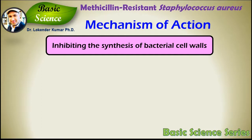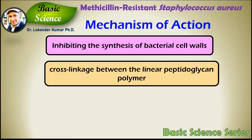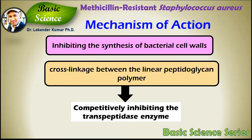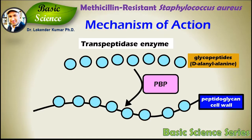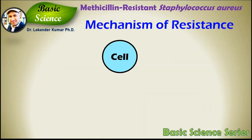Like other beta-lactam antibiotics, methicillin acts by inhibiting the synthesis of bacterial cell walls. Cell wall is very important for bacterial survival — it protects it from environmental stress. It inhibits cross-linkage between the linear peptidoglycan polymer chains that make up a major component of the cell wall of gram-positive bacteria. It does this by binding and competitively inhibiting the transpeptidase enzyme, also known as penicillin-binding proteins, which cross-link glycopeptides known as D-alanine, forming the peptidoglycan cell wall.